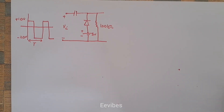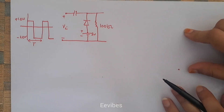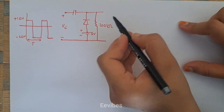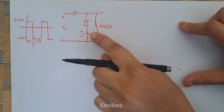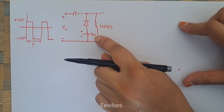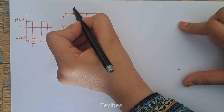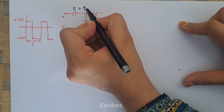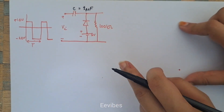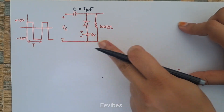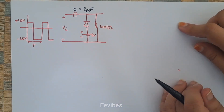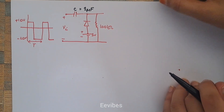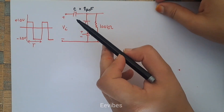Hi everyone, this is Asma Mushtaq from the Double E Wipes. In this video lecture I'm going to explain the example of a biased clamper circuitry, where you can see that a diode is connected in series with a plus 5 volt battery. Here is the capacitor — its value is equal to 1 microfarad. Later on we will see the magnitude of the output voltage waveform as well as the value of tau in the circuitry.